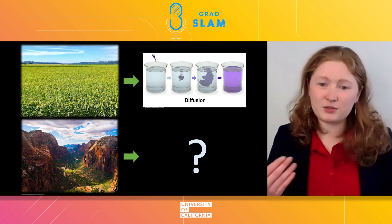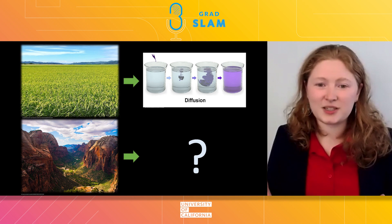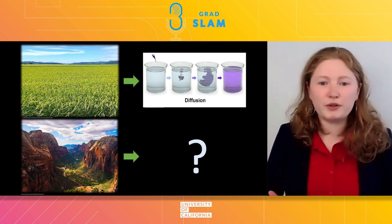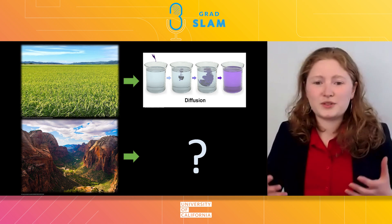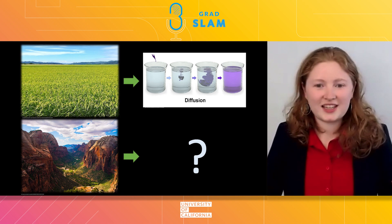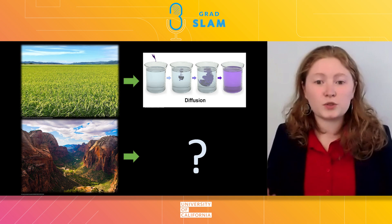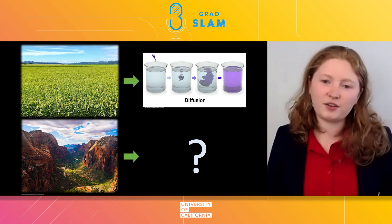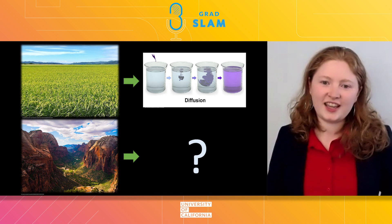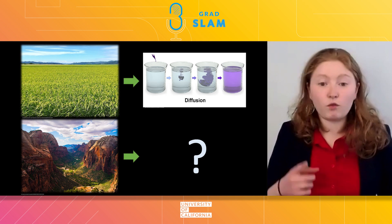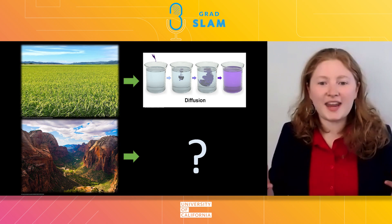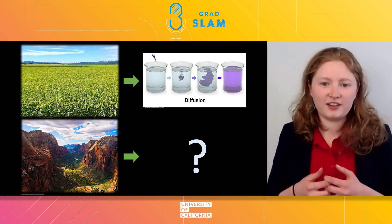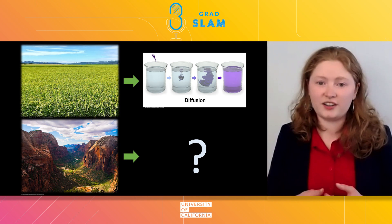But as you and I know, a real landscape isn't just a field. It has rivers, roads, mountains, and a species will spread differently depending on what it encounters. This means instead of one equation, we need many, and they have to work together. This is hard.